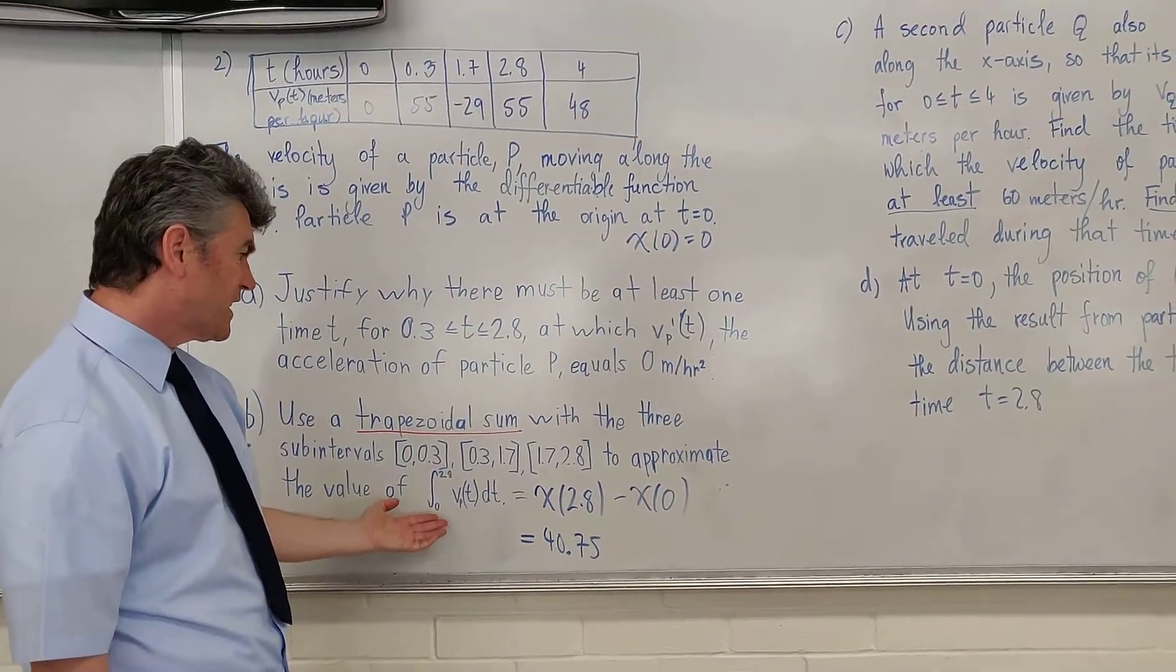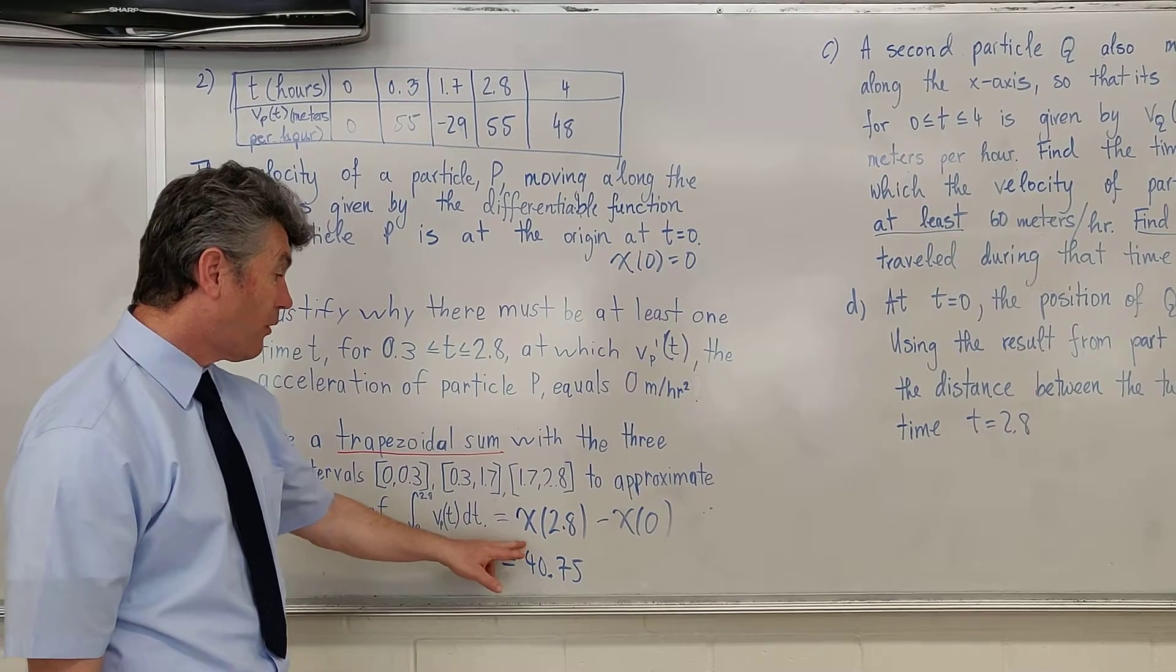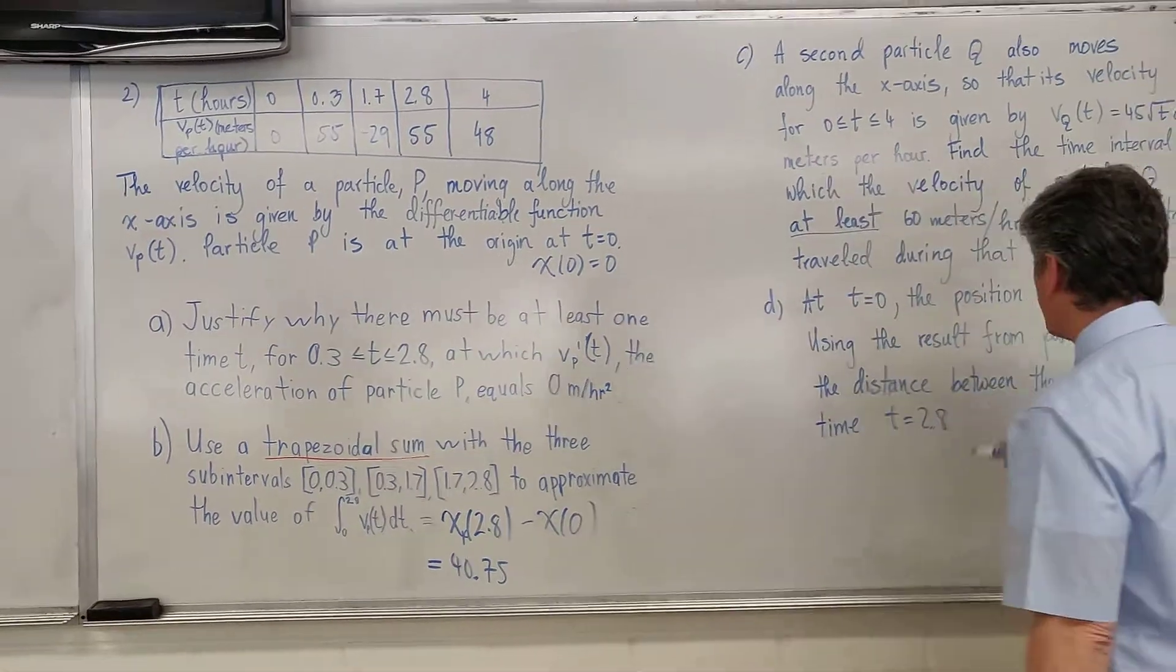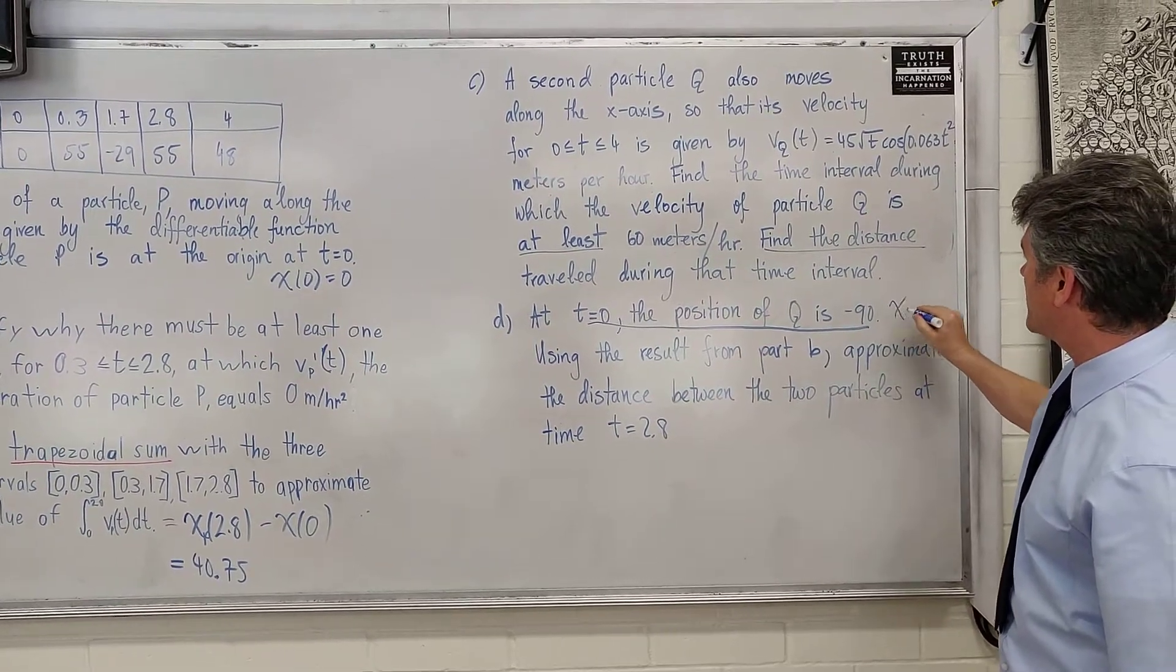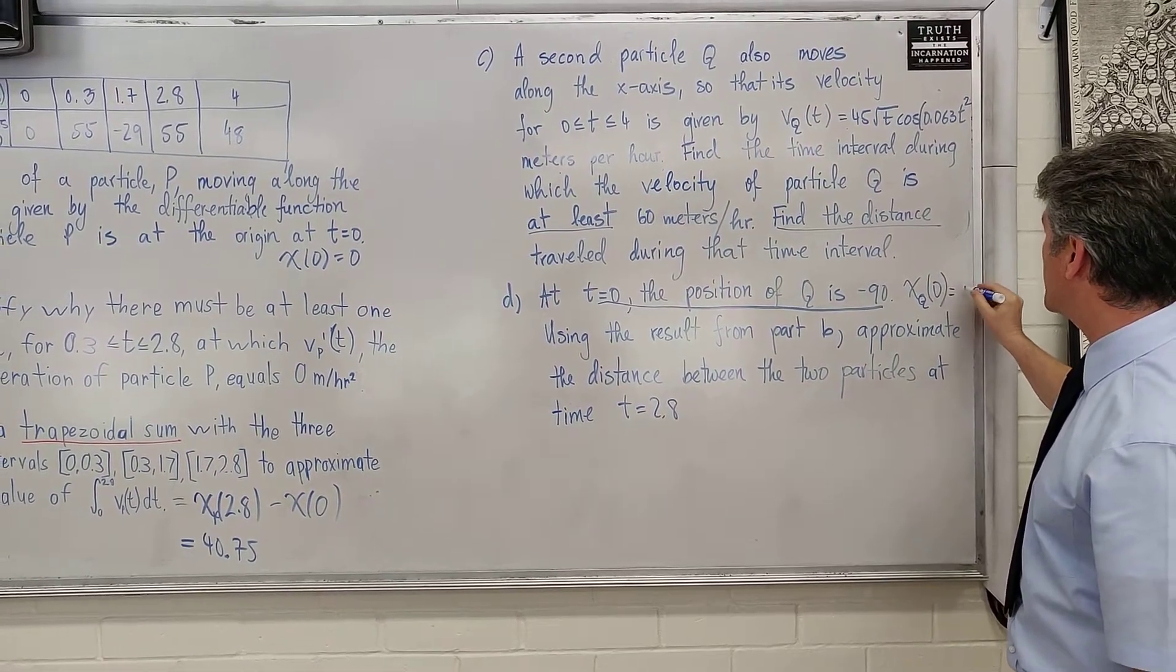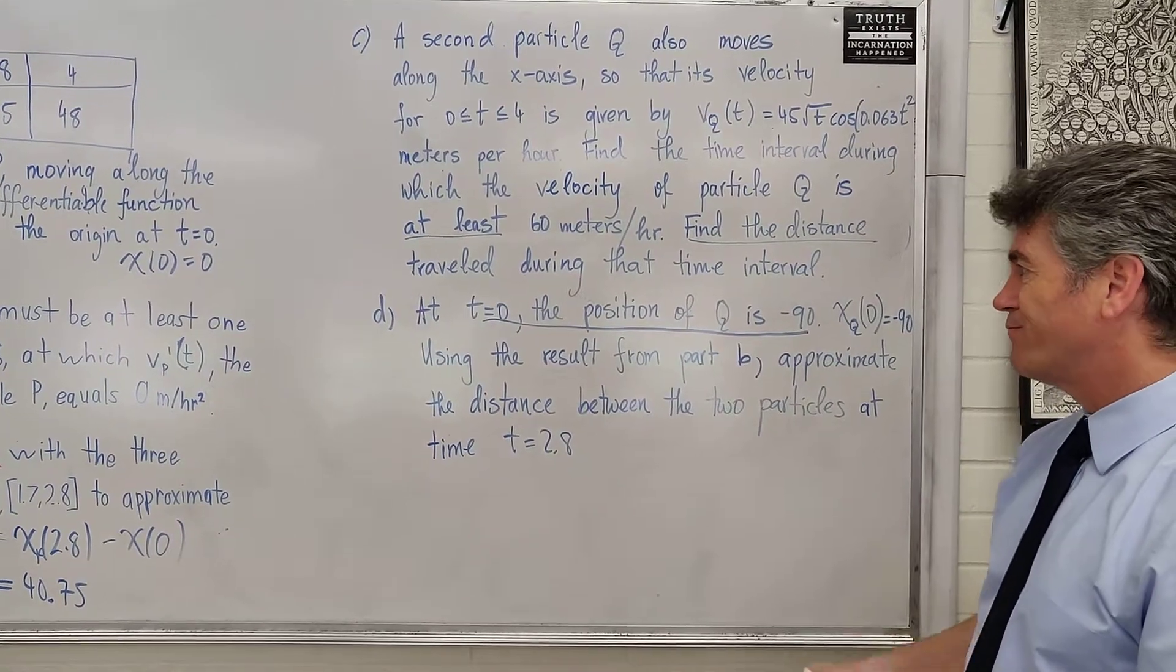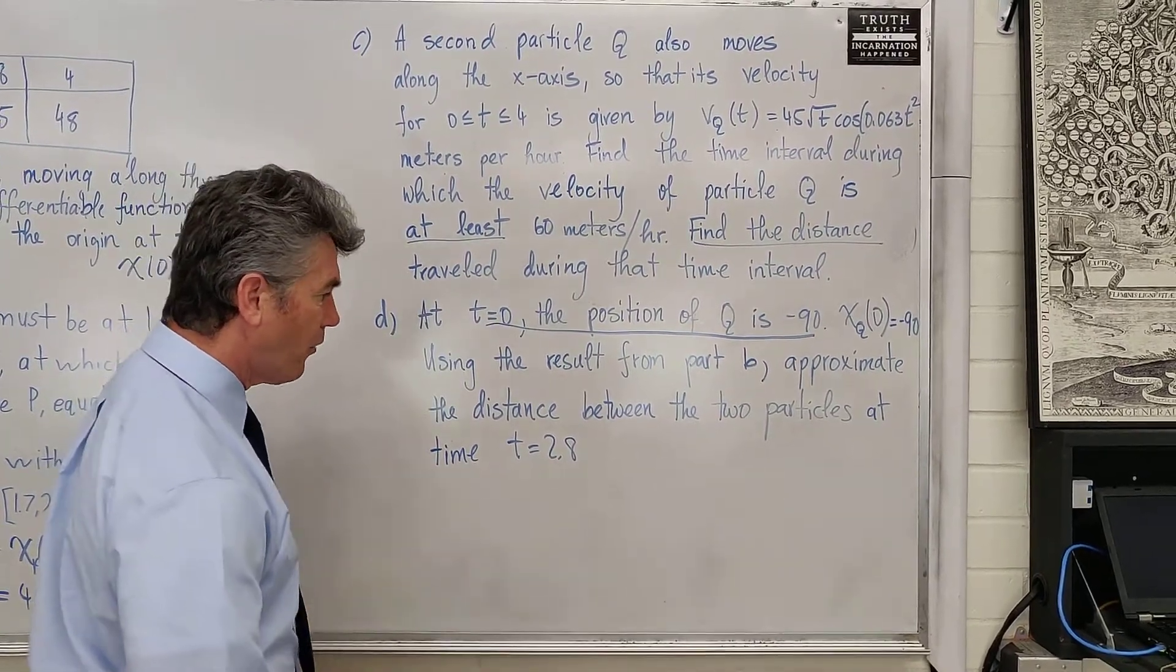We approximated this distance and figured out that at time 2.8, the position of particle P is 40.75. Now we want to find the position of particle Q. How do we do that? The first thing we notice is that an important piece of information is given, which is X sub Q, the position of particle Q at time t equals 0 is equal to negative 90.